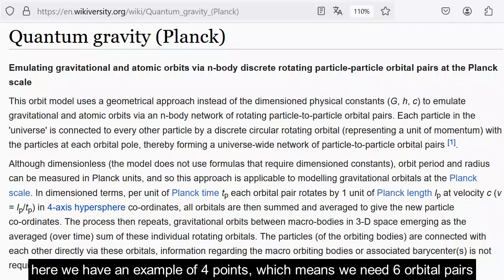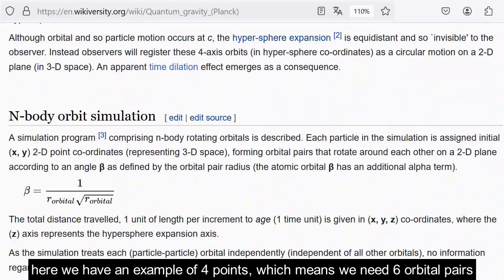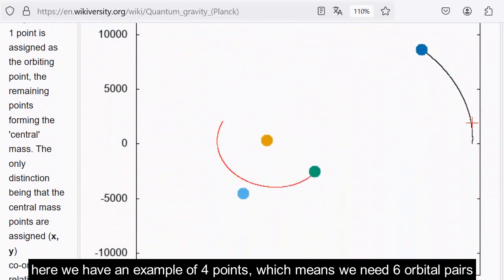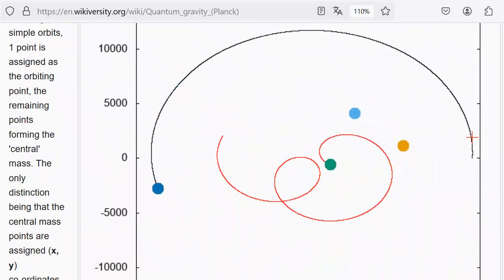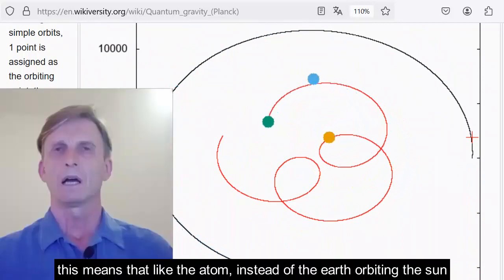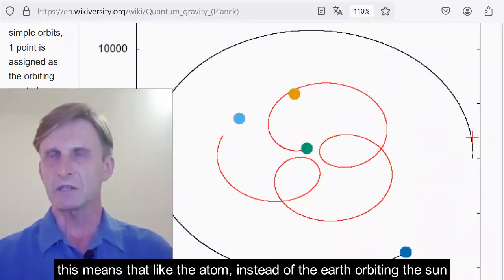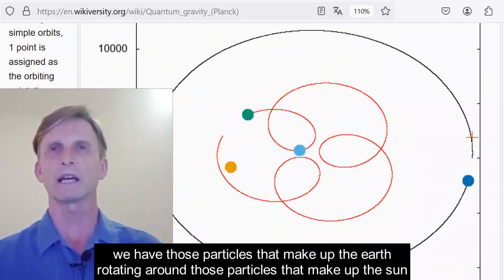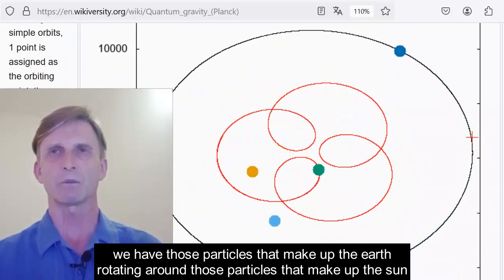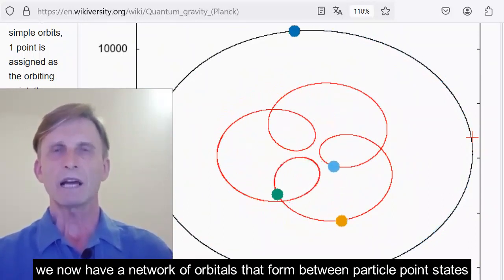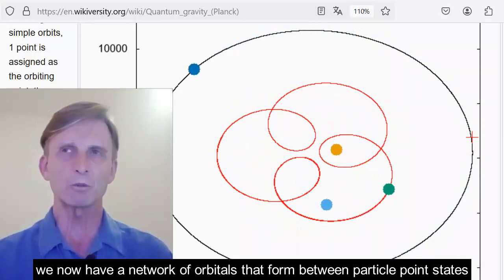Here we have an example of four points. And as you see, they all need six orbitals. Six orbital pairs. This means that, like the atom, instead of the Earth orbiting the Sun, we have those particles that make up the Earth rotating around those particles that make up the Sun.